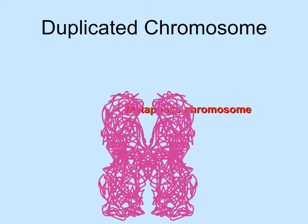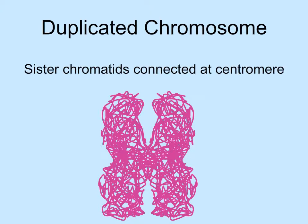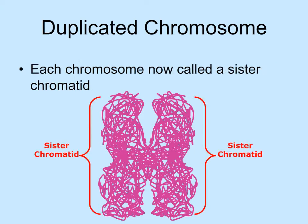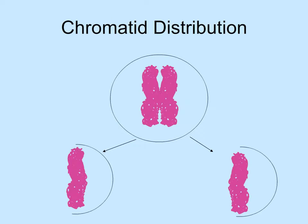The duplicated chromosome continues condensing through the first half of mitosis and is typically referred to as a metaphase chromosome during this time. The two copies are joined together at the centromere, and each copy is now called a chromatid. Both copies are called sister chromatids, as they have the same DNA sequences. Two chromatids that are not exact copies of the same chromosome are called non-sister chromatids. During mitosis, the chromatids are distributed into the nuclei of the two new daughter cells.